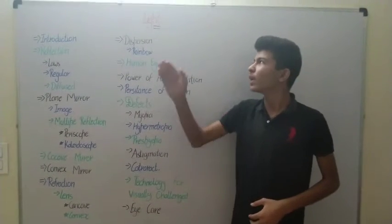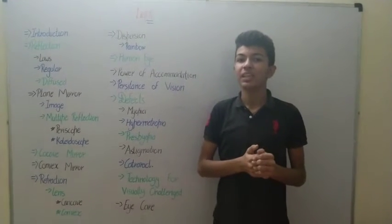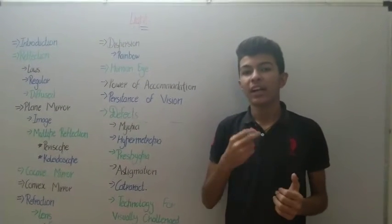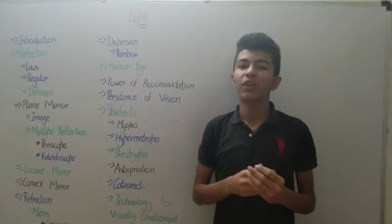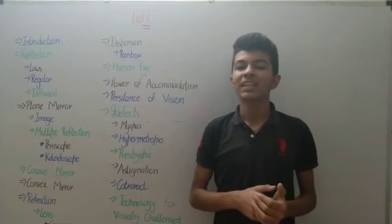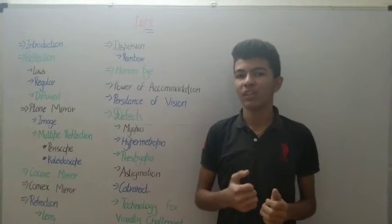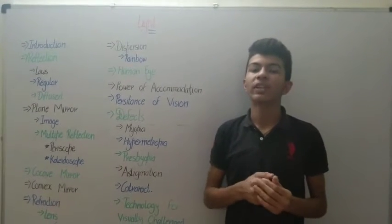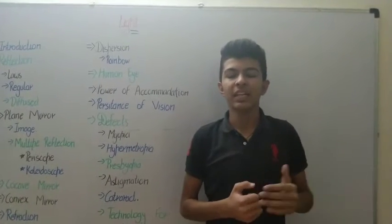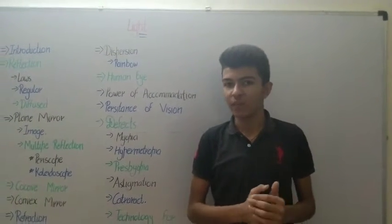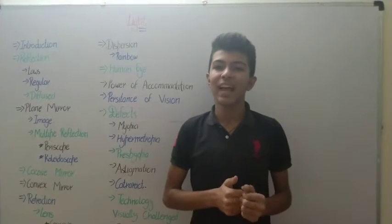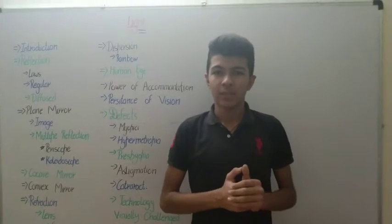Hello friends, this is Praveen and today we are going to learn about light. Light is an essential part of our daily life. In previous classes, we learned that there are two types of objects: luminous objects which produce their own light, and non-luminous objects which do not. We also learned about transparent, translucent, and opaque materials, and that light always travels in a straight line — this is known as the rectilinear propagation of light. So let's get started.